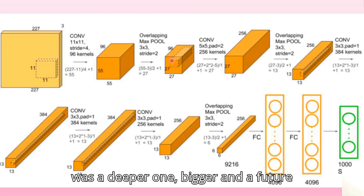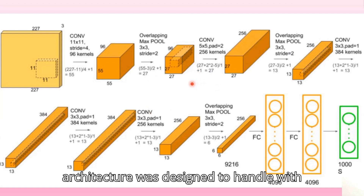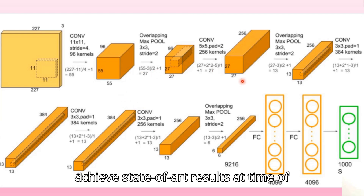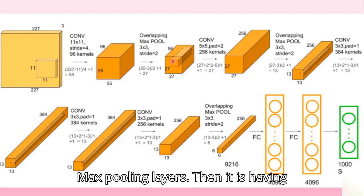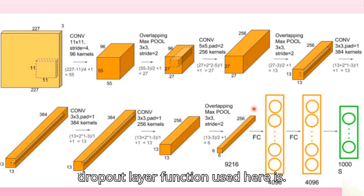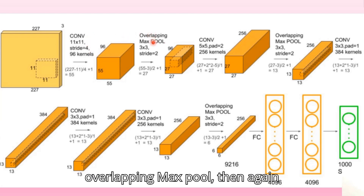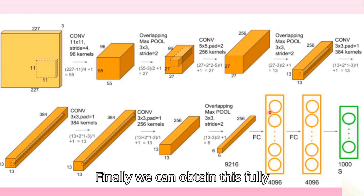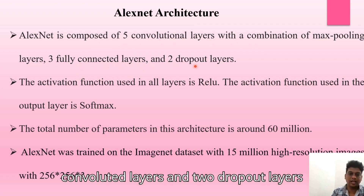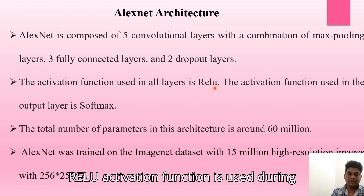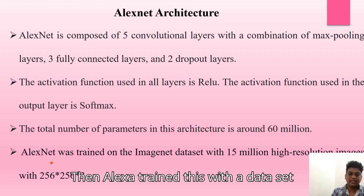AlexNet has a very similar structure to LeNet but is deeper and bigger, with a feature convolution layer on top. It was designed to handle large-scale image datasets and achieve state-of-the-art results at the time of its invention. It consists of five convolution layers combined with max pooling layers, three fully connected layers, and one dropout layer. The activation function used is a softmax classifier to detect multiple classes. ReLU activation is used during training, and it has around 60 million parameters. AlexNet was trained on a dataset of 15 million high-resolution images.